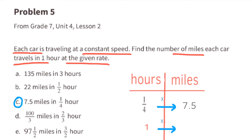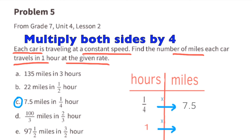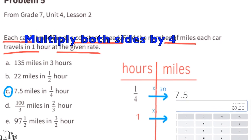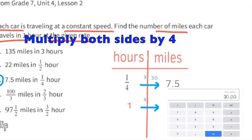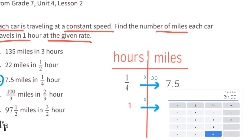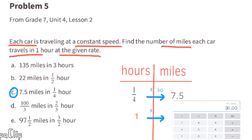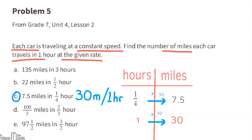C: the given rate is 7.5 miles in 1/4 of an hour. We can multiply 1/4 times 4 to get 1 hour, and multiply 7.5 times 4 to get 30. So car C is driving 30 miles in 1 hour.